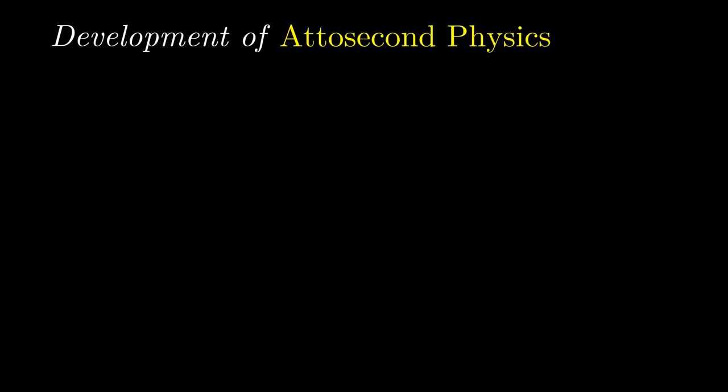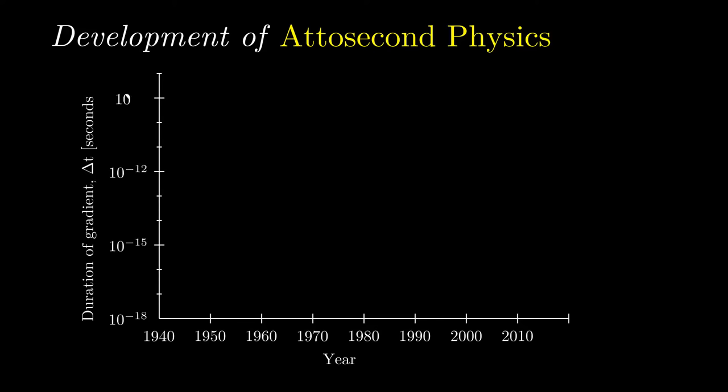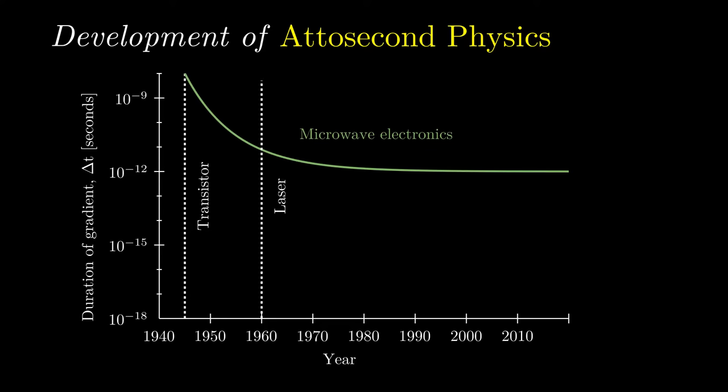Three distinct technological breakthroughs over the last 80 years have paved the way for the development of modern-day attosecond physics. In the 1940s, the development of microwave electronics allowed imaging down to picosecond speeds. This technology utilized transistors to produce high-speed bursts of microwave energy known as electrical transients. In the 1960s, a new technology called ultrafast optics was born.